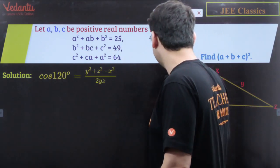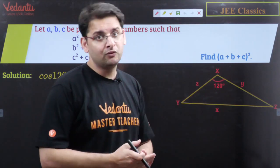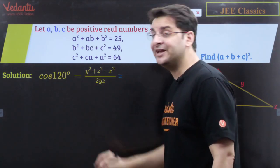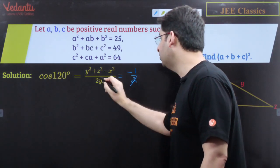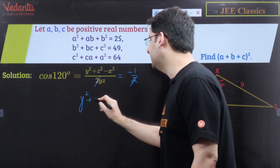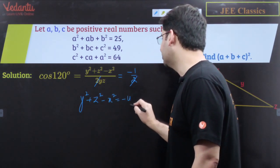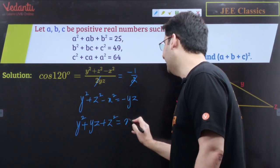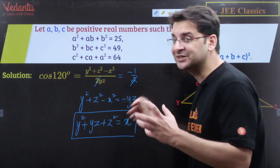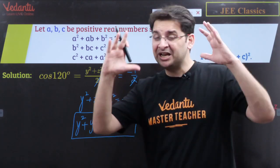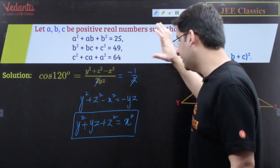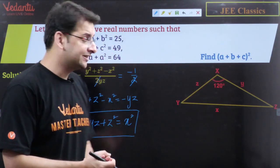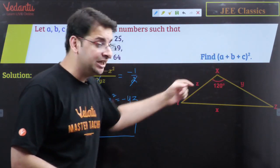So cos(120°) = (Y²+Z²−X²)/(2YZ). Since cos(120°) = −1/2, we cancel the 2 and cross-multiply to get Y²+Z²−X² = −YZ. This forms the basis of our solution. What I want to tell you is: if there is a triangle with two adjacent sides Y and Z and the included angle is 120 degrees, then Y²+Z²+YZ = X², where X is the opposite side.